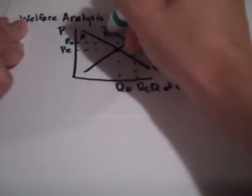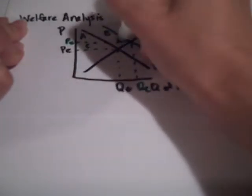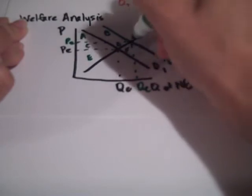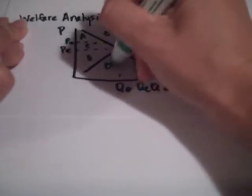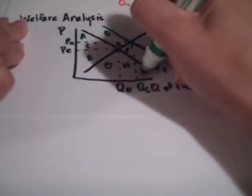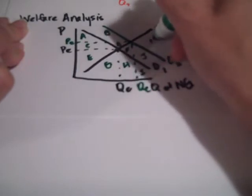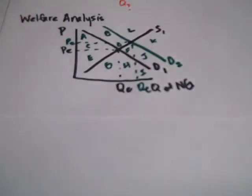We're going to look at our benefit analysis here. A, B, C, D, E, F, G, H, I, J, K, L.